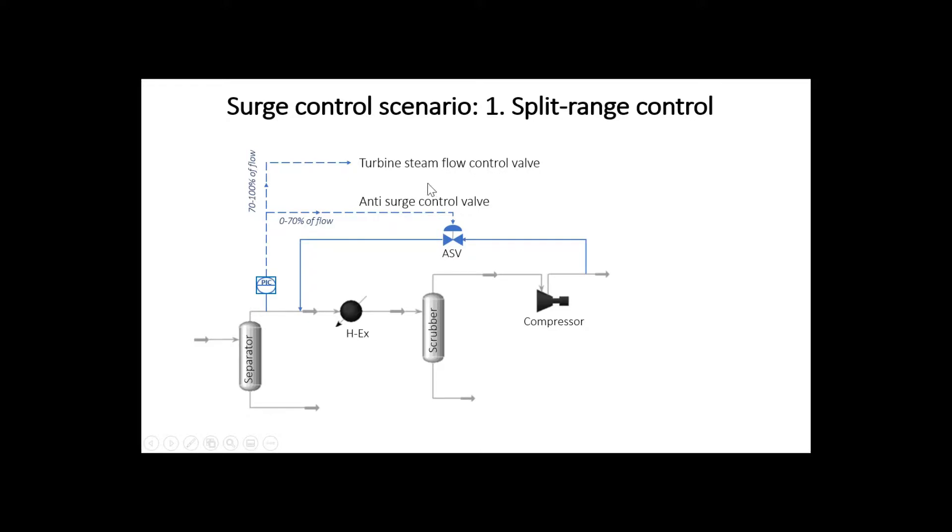If the pressure further decreases below 70%, then control system additionally opens the anti-surge valve and recycles the discharge fluid in order to pressurize the suction line. This is one example where we employ split range control in anti-surge control system.